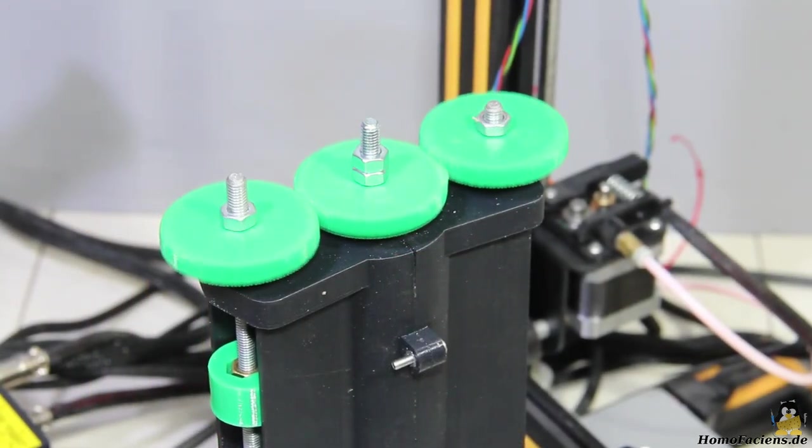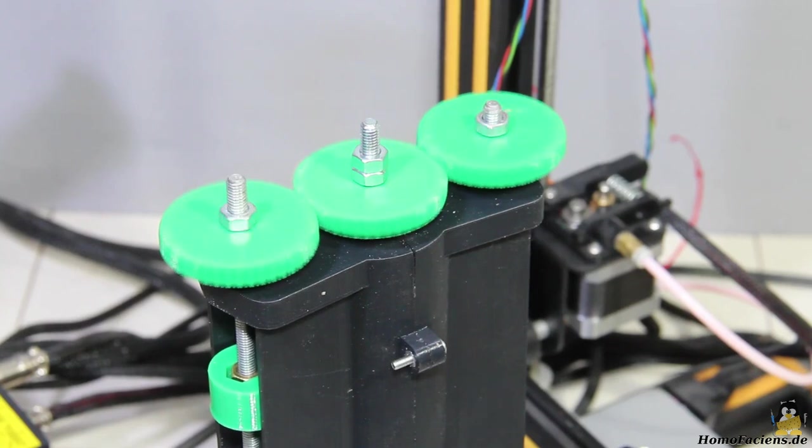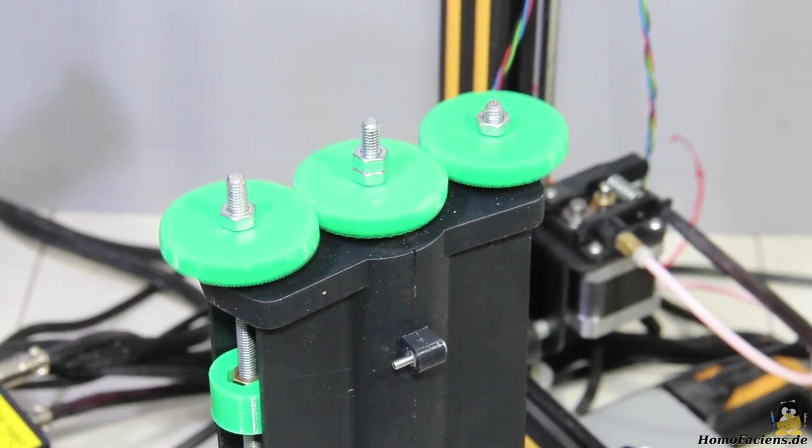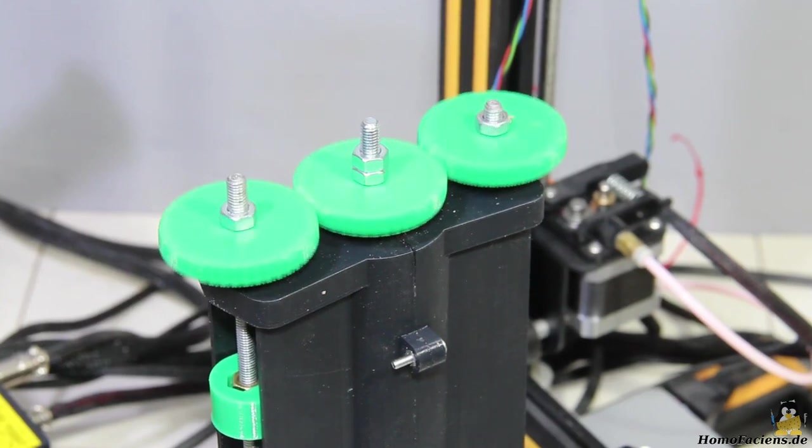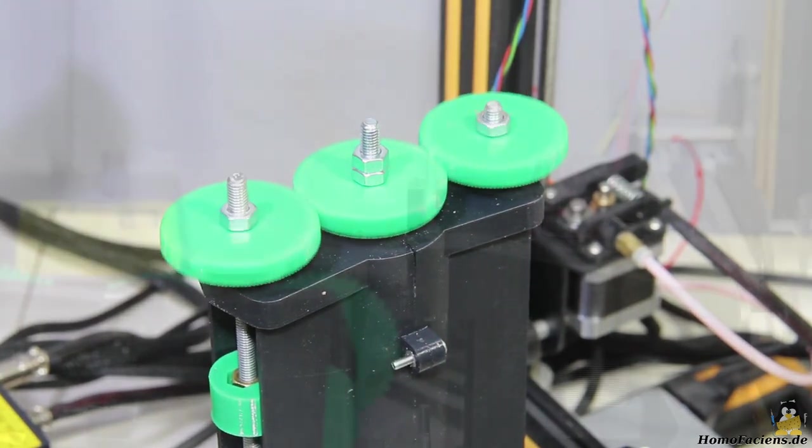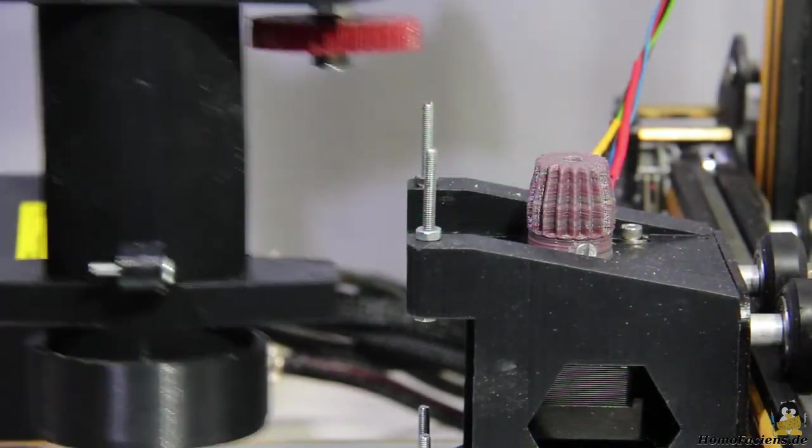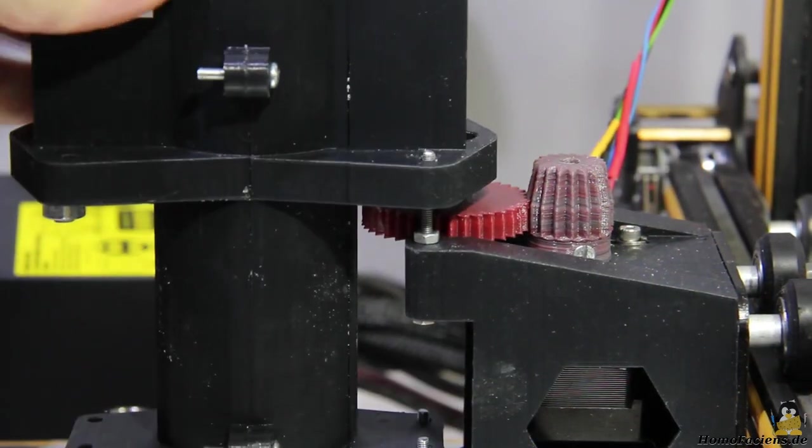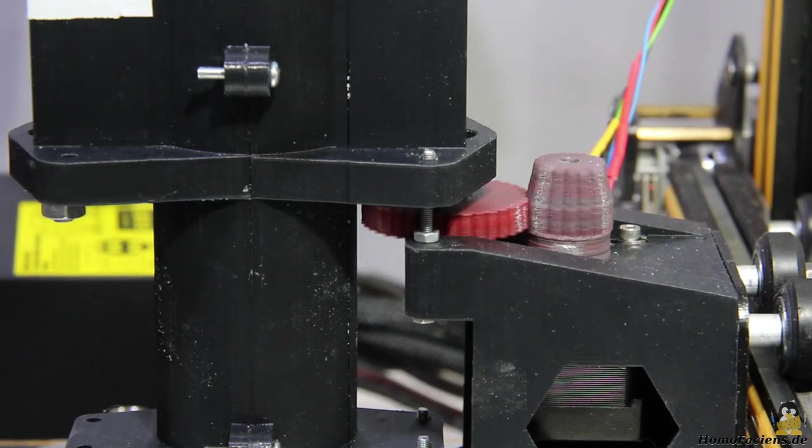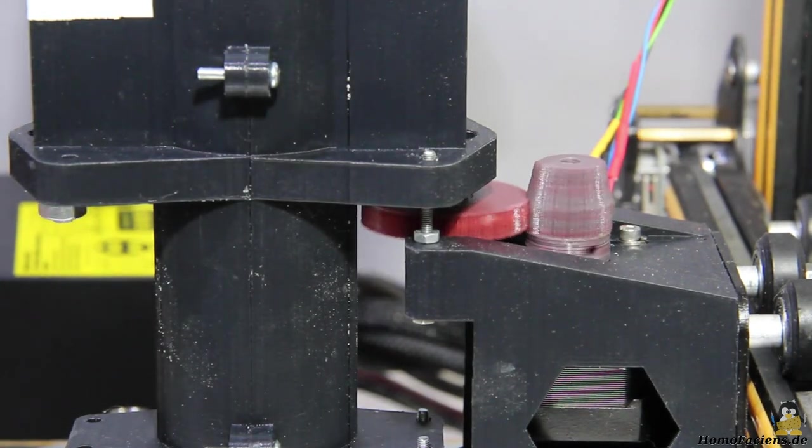Three gears on top of the cartridge ensure that both threaded rods move synchronously and thus press the piston down evenly. On the bottom there is a fourth gear which fits on the pinion of the extruder motor as soon as the cartridge falls down along the four screws on the X-axis bracket.